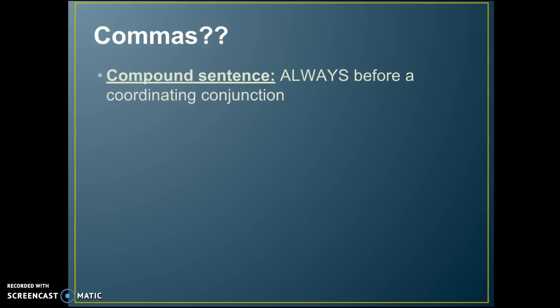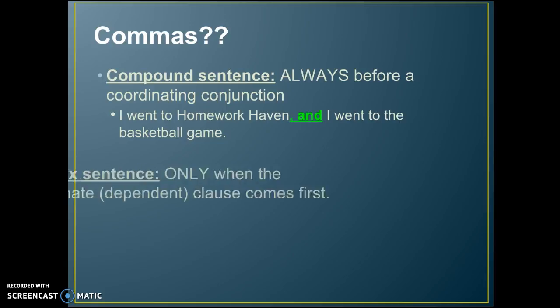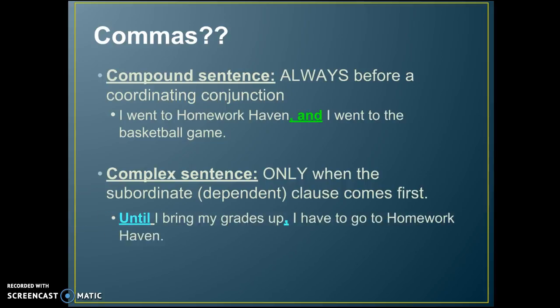In a compound sentence, you always have a comma before the coordinating conjunction — always, always, always. For example: 'I went to homework even, and I went to the basketball game.' In a complex sentence it's a little more complex, because you only use a comma when the subordinate clause comes first. For example: 'Until I bring my grades up, I have to go to homework even.' You'll notice there's a little pause after the dependent clause.